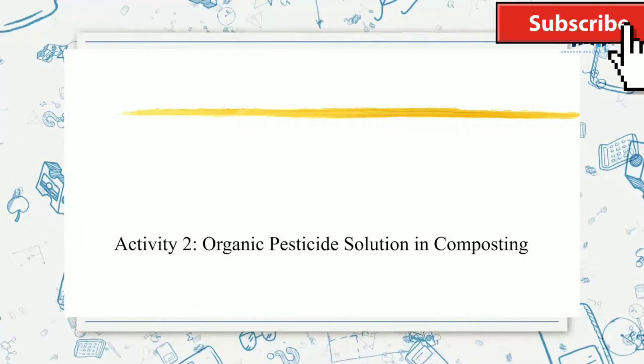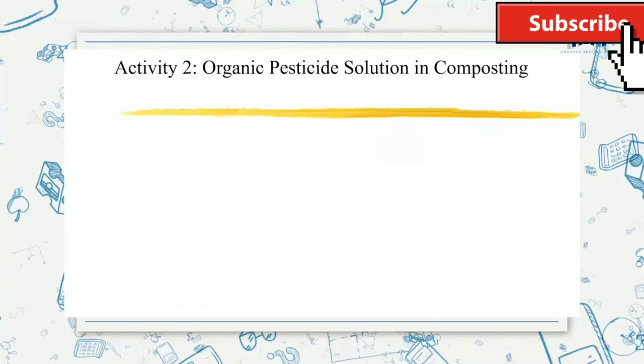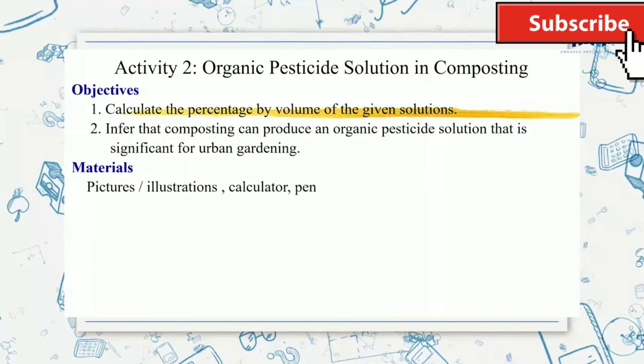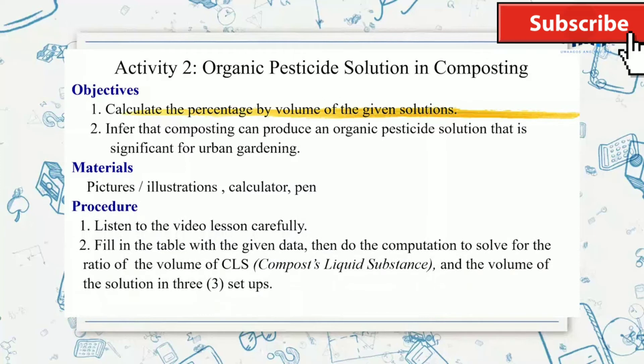To respond to the call of urban gardening in a new normal situation, bring out your activity number two, organic pesticide solution in composting. Read the objectives, the materials, and the procedure in your activity sheet number two. It is very important to listen to the video lesson carefully. Fill in the table with the given data, then do the computation to solve for the ratio of the volume of CLS and the volume of the solution in three setups.